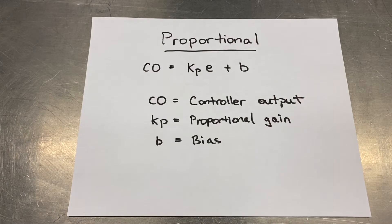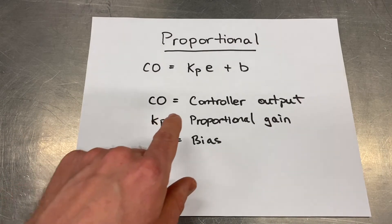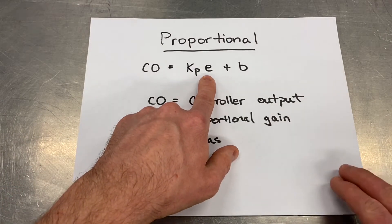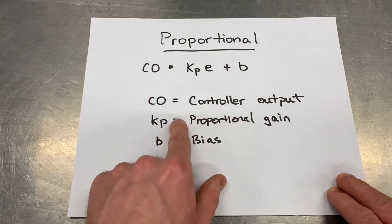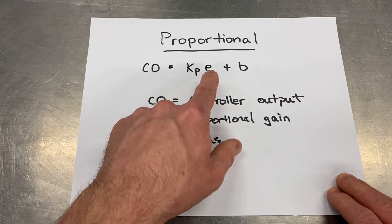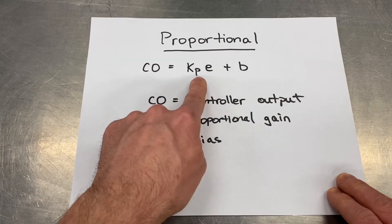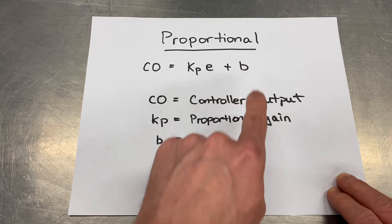Proportional control allows us to prevent that on-off cycling. So if you look here, there's our error that we talked about before. What proportional control is, is the output or the controller output signal is going to be equal to the proportional gain times the error plus a biasing. So proportional meaning that the output here is going to be proportional to the error.